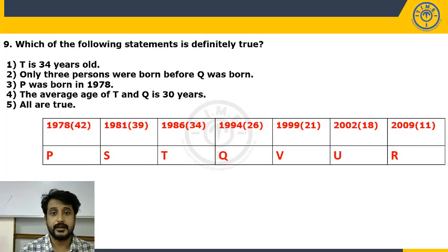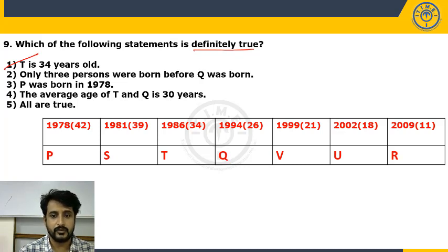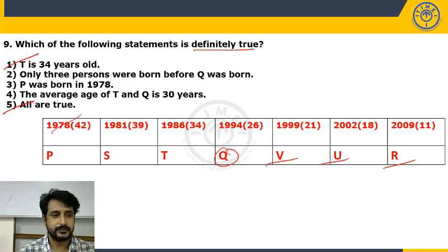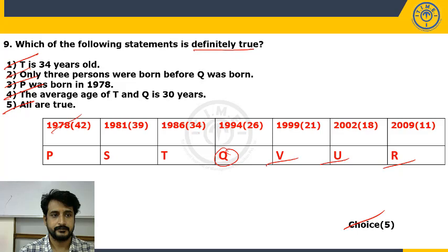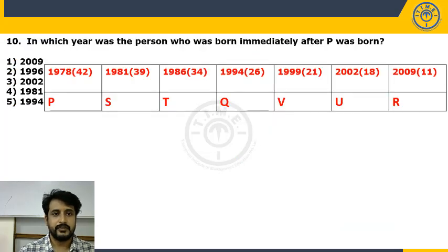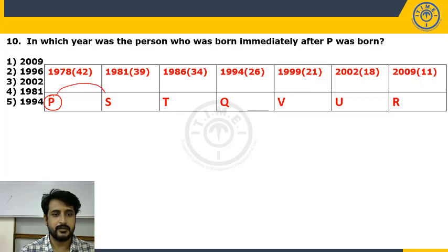Question: which statement is definitely true? T is 34 years old — yes. Only 3 persons were born after Q — yes (V, U, R). T was born in 1978? No, T was born in 1986 — wait, checking: P is born in 1978. The average of ages of T and Q = (34 + 26) / 2 = 30 — yes. All listed statements are true — choice 4. Final question: in which year was the person born immediately after P? S was born immediately after P, in the year 1981 — choice 4.